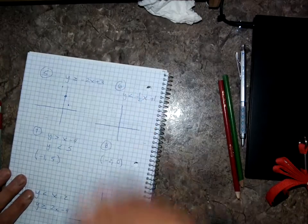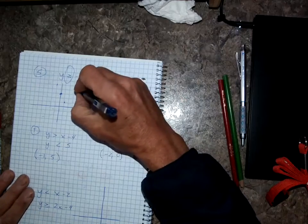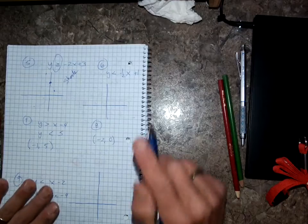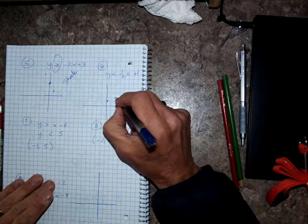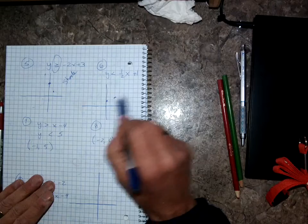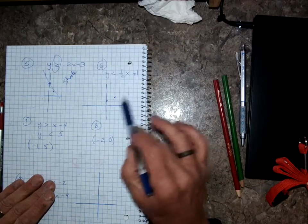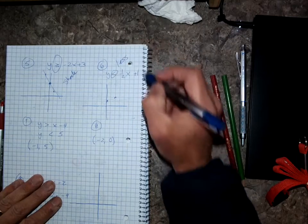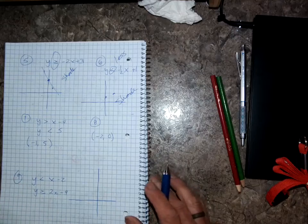I'm going to have a solid line and shade — it's greater than, so I'm going to shade. For six, I'll start at 1, go up 1 over 2, up 1 over 2. This one is a dash line because there's no equal sign. It says less than, so I'm going to shade less than — figure out which way to shade.